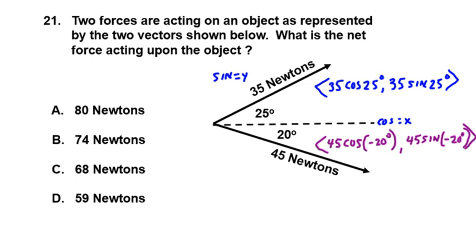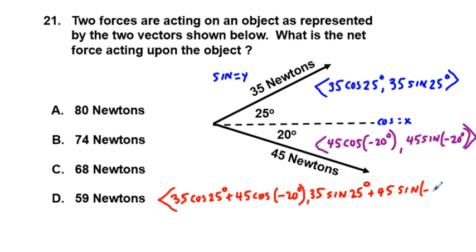And then we can add these two together and put them in one place. To do that, I'm going to add them in red and leave a lot of room here on the left. So we're going to have 35 cosine of 25 degrees plus 45 cosine of negative 20 degrees, comma, 35 sine of 25 degrees plus 45 sine of negative 20 degrees. There we have it.